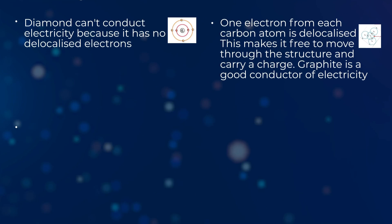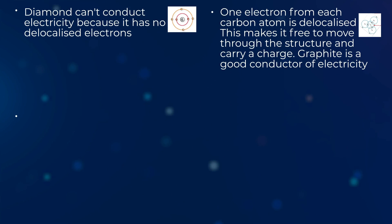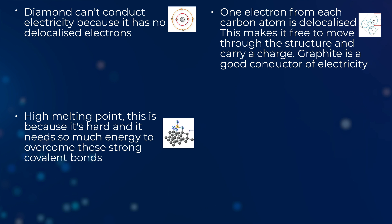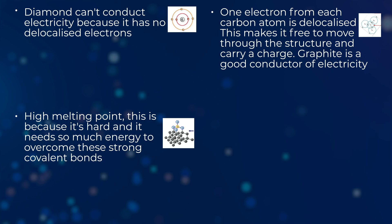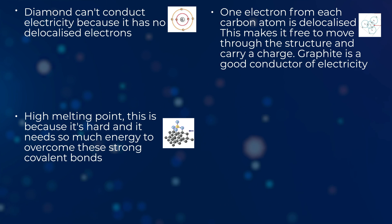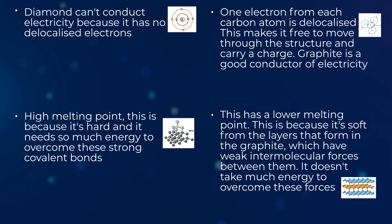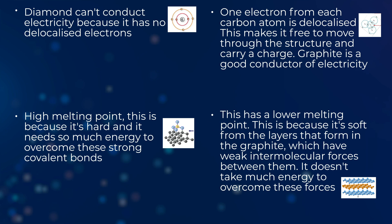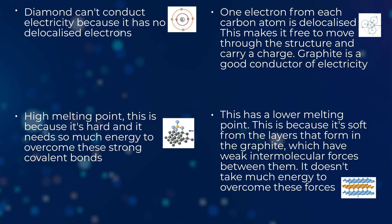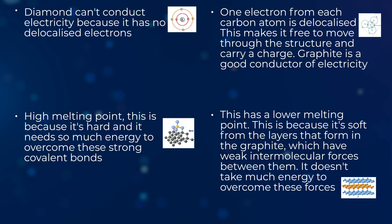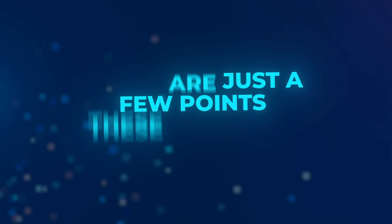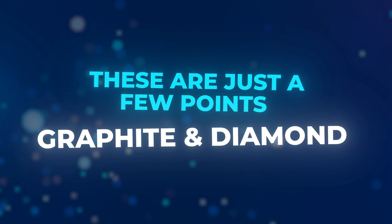In terms of melting and boiling points, diamond has a high melting point because it needs so much energy to overcome its strong covalent bonds. Graphite has a lower melting point because its layers have weak intermolecular forces between them, meaning it doesn't take much energy to overcome those forces, whereas diamond requires a lot of energy. These are just a few points about graphite and diamond — there are many more you could include.